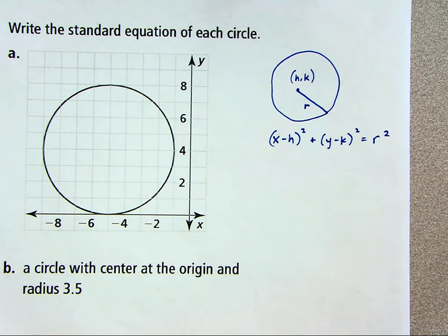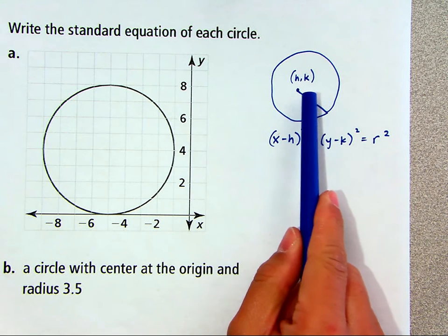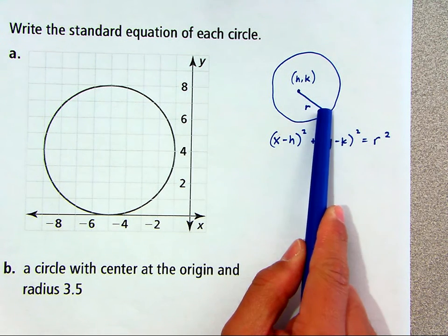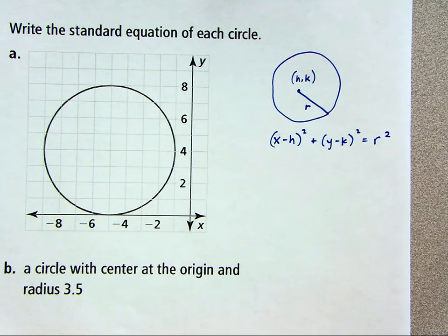So this is the general equation of a circle. And you only need to know three characteristics of this circle. You need to know the horizontal position of its center, the vertical position of its center, and its radius. With those three values, you can write its equation.